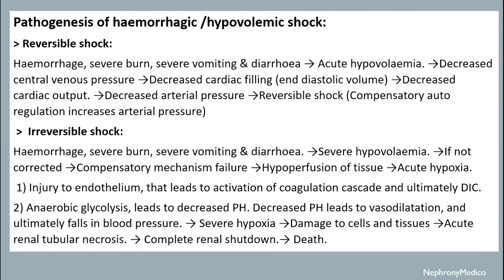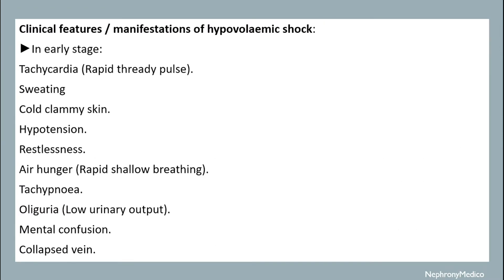Clinical features of hypovolemic shock in the early stage include tachycardia with rapid, thready pulse, sweating, cold clammy skin, hypotension, restlessness, air hunger with rapid shallow breathing, tachypnea, oliguria, mental confusion, and collapse.